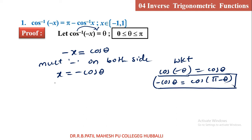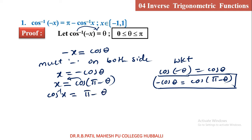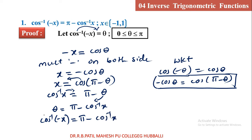Many students think cos of minus theta is minus cos theta, but it is cos theta. So minus cos theta is expressed in the second quadrant as cos of pi minus theta. Therefore x is equal to cos of pi minus theta. Taking cos to the left side: cos inverse x is equal to pi minus theta, giving theta is equal to pi minus cos inverse x. Replacing theta: cos inverse of minus x is equal to pi minus cos inverse x.